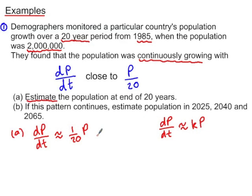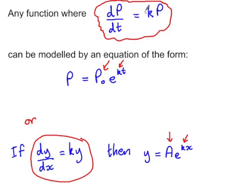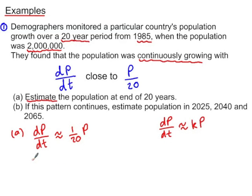So now if we substitute in some values and use the anti-derivative from before, we have it in this form. We can now model it using p₀, which is the initial population, and k, which is that scalar multiple. So p is approximately equal to the initial population, which is 2 million, and e to the k, which is 1 over 20, times t, so t over 20.